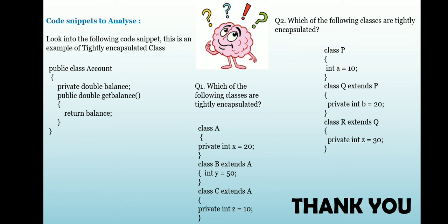Now, here I am giving you some code snippets to analyze. So look into the following code. This is an example of tightly encapsulated class. So why this class is called tightly encapsulated class? Because all the data members present inside the class is strictly declared as private. Then they are called as tightly encapsulated class. Now, hope you understand the meaning of tightly encapsulated class.